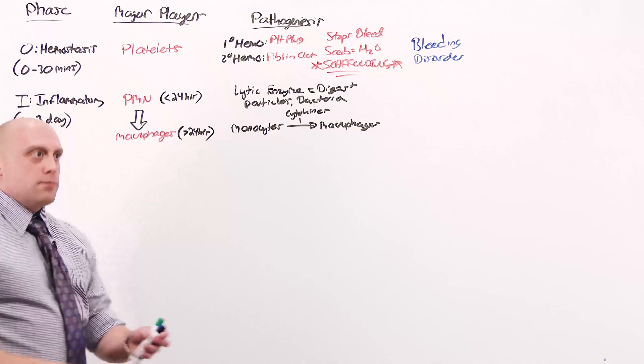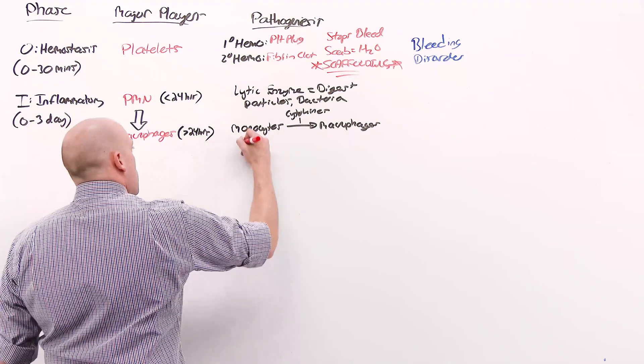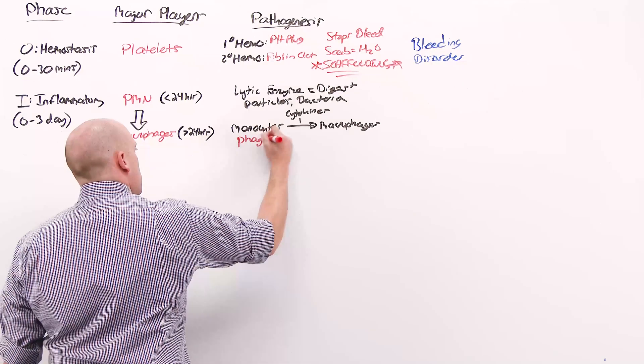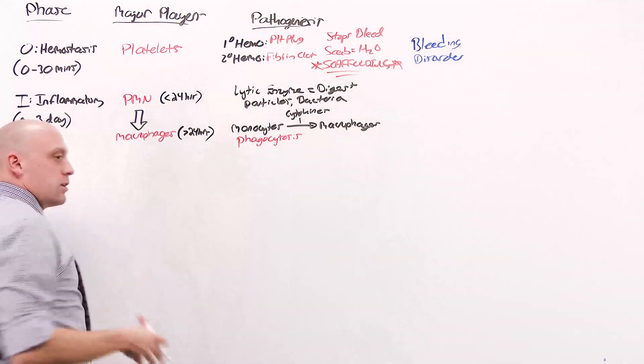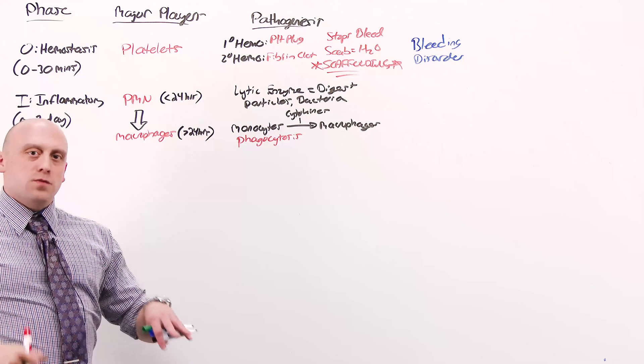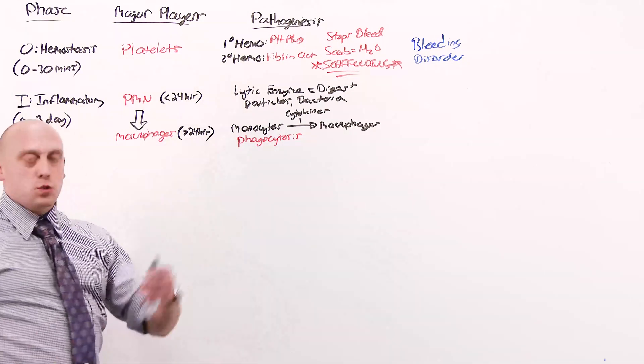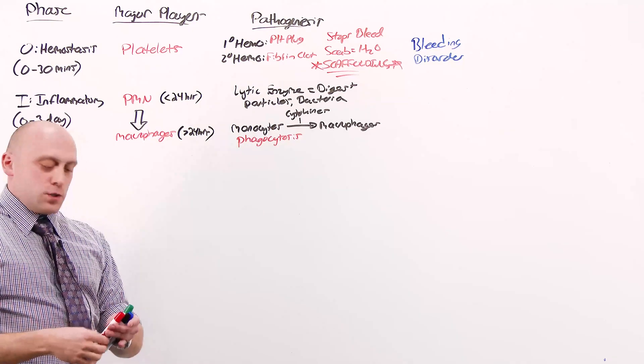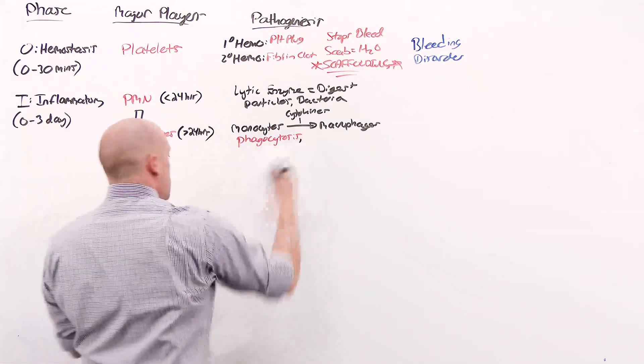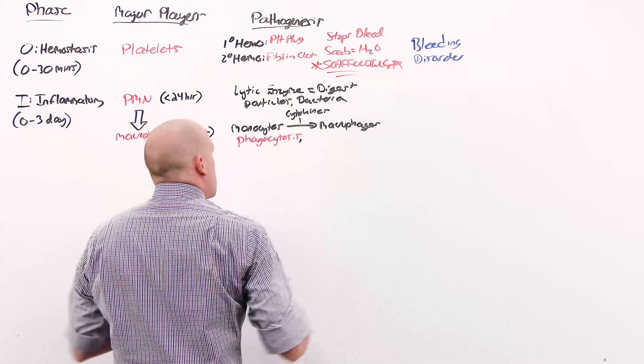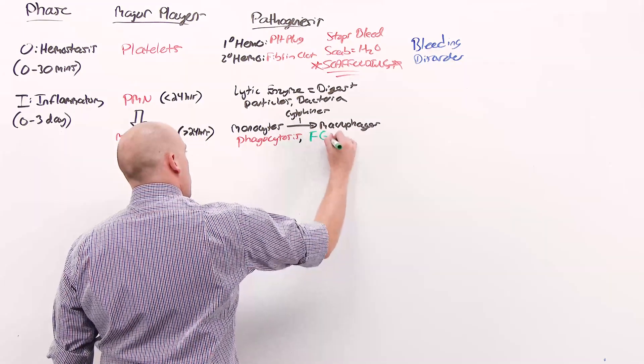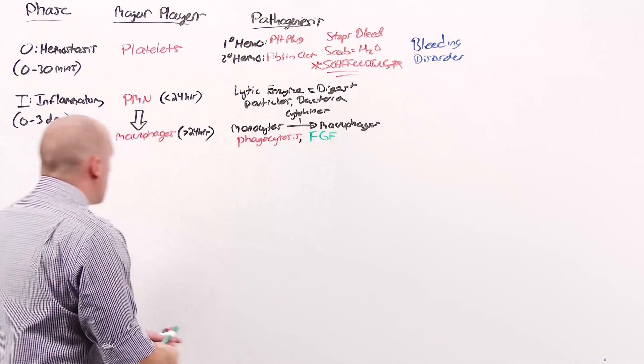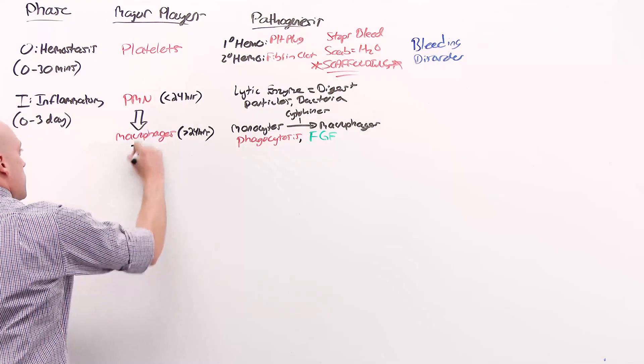The macrophages then, primarily, are there to do phagocytosis. All of the stuff that the lytic enzymes started to degrade, all the bacteria the neutrophils kill, the macrophages come and sweep up. The macrophages are also there to send the signal to the fibroblasts. The macrophages release fibroblast growth factor, which actually helps bring in the cells of the next phase.